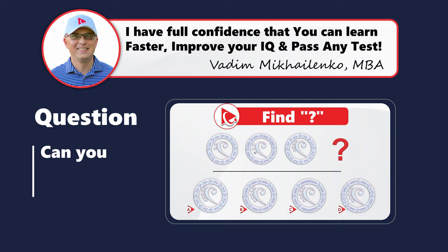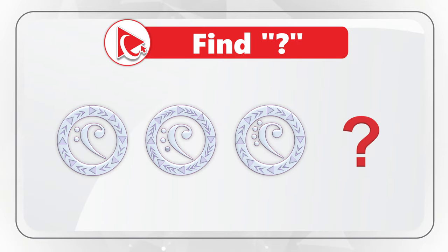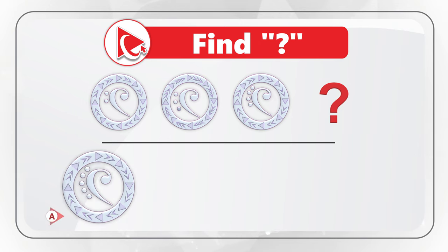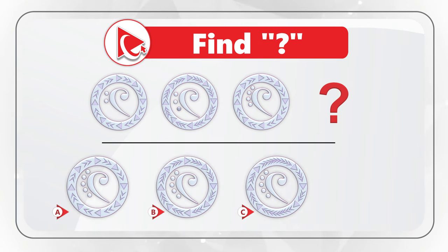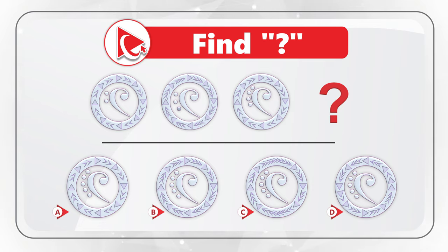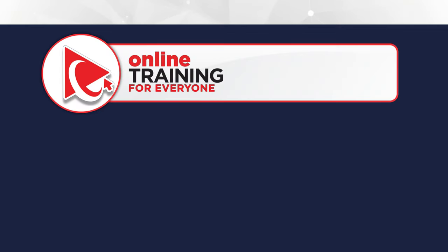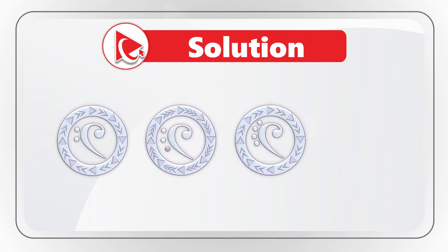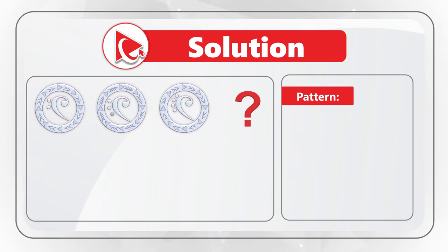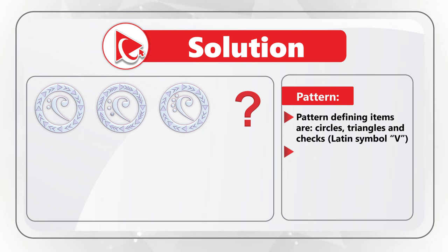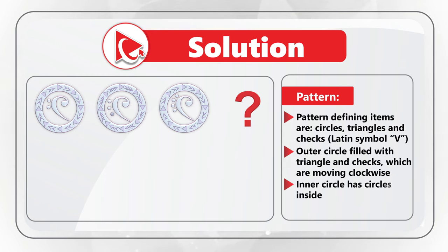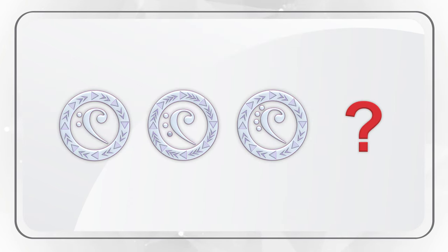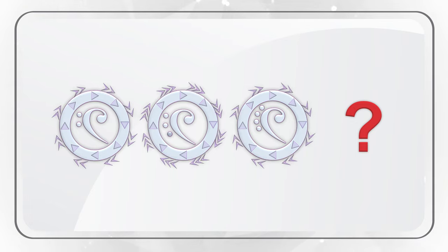Let's look at a very interesting question which really makes you think. You're presented with three shapes, and the fourth shape is missing. You need to select the missing shape out of four different choices — A, B, C, and D. Take a close look at the pattern of shapes to see if you can come up with the solution. The key is to define the pattern. Pattern-defining items are circles, triangles, and checks — they look like the Latin symbol V. If you look closely at the outer circle, it's filled with triangles and those checks, which are moving clockwise.